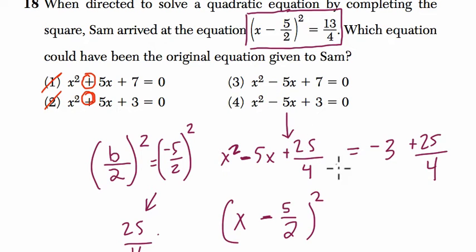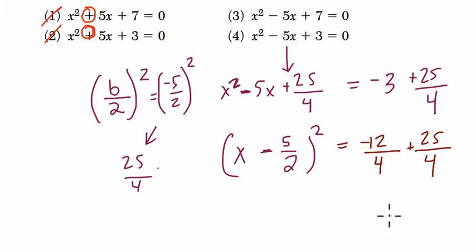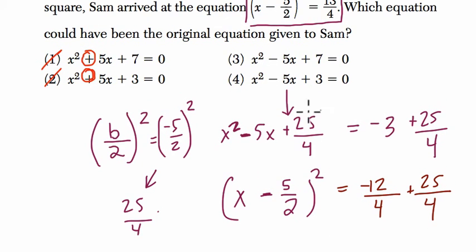Now, the next thing to notice as we finish this, completing the square, if we add negative 3 to 25 fourths, well, I know negative 3 is negative 12 over 4. Same thing. Plus 25 fourths. If I simplify this, what's that? Plus 13 fourths, right? And this is the step that we're looking at. This tells us that we found the answer, which is choice 4.